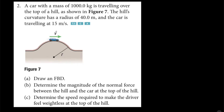A car with a mass of 1,000 kilograms is traveling over the top of a hill as shown below. The hill's curvature has a radius of 40 meters and the car is traveling at 15 meters per second.